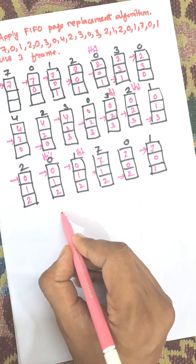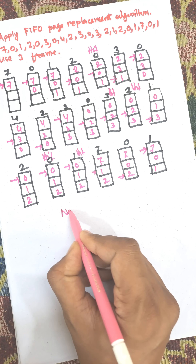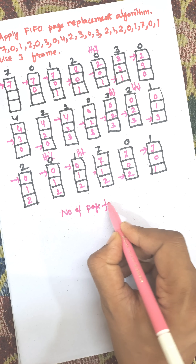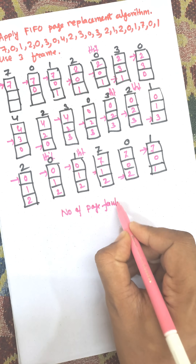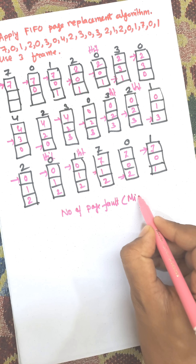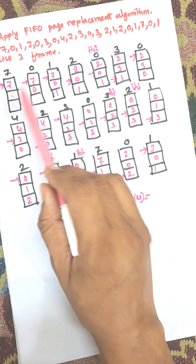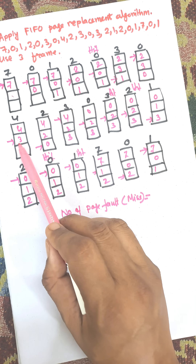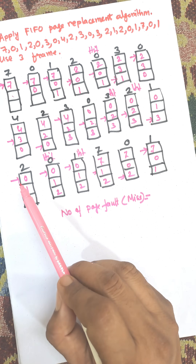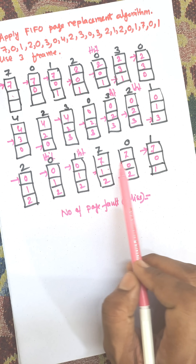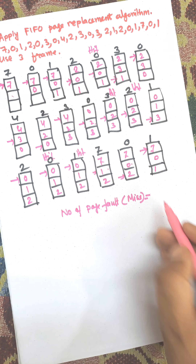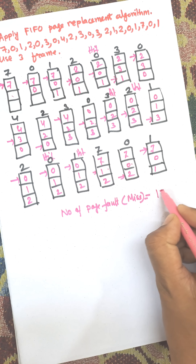Now let us count the number of page faults. Page fault means the number of misses. Counting through all the references: 1, 2, 3, 4, 5, 6, 7, 8, 9, 10, 11, 12, 13, 14, 15. The number of page faults equals 15, and the number of hits equals 5.